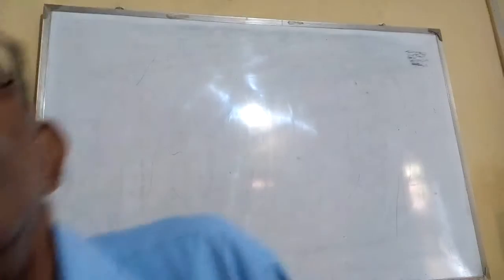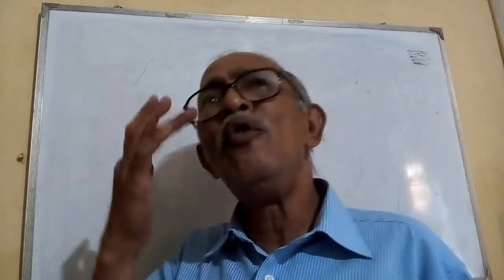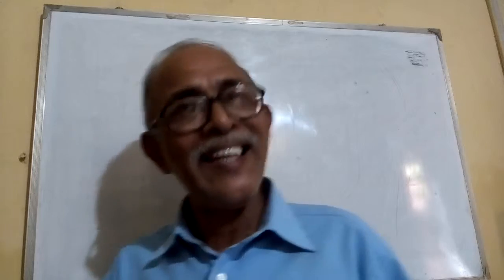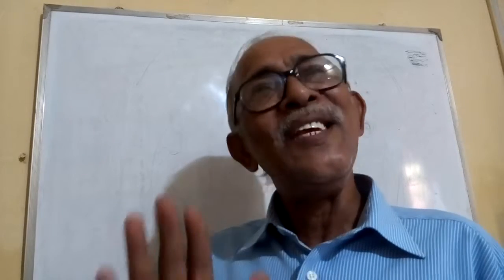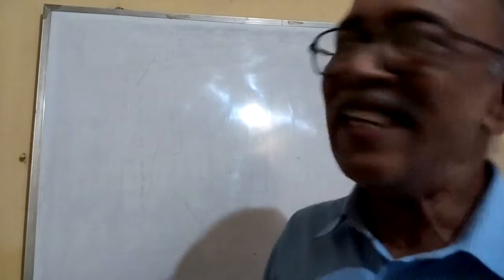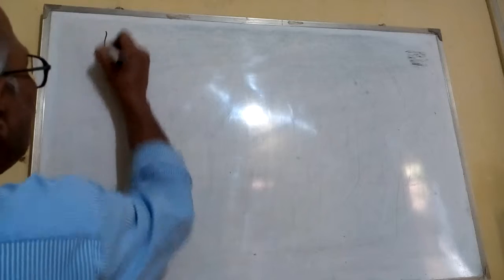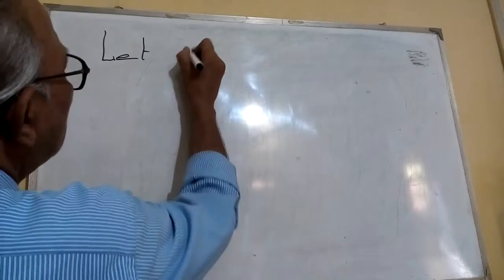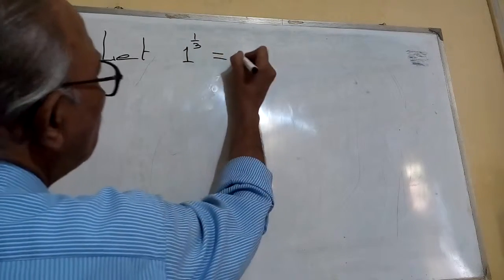Welcome. Now we are going to find the cube root of one. Don't say that you already know the cube root of one is one — that much is not sufficient. You can be able to know something more. Let us see. Let us assume that we are not knowing what is the cube root of one. So let us assume: let cube root of one equals to x.